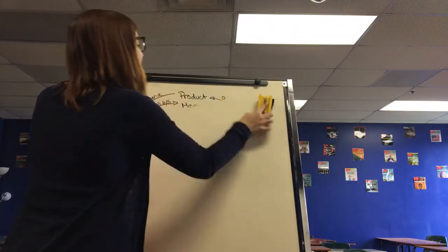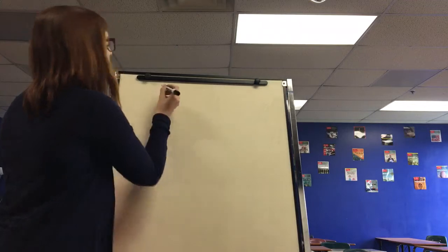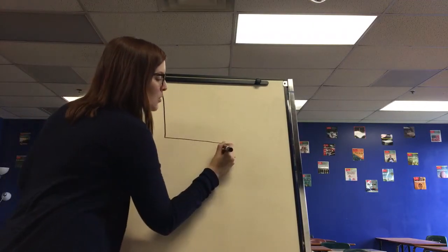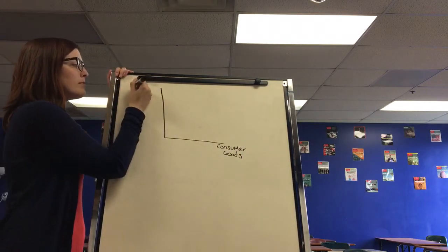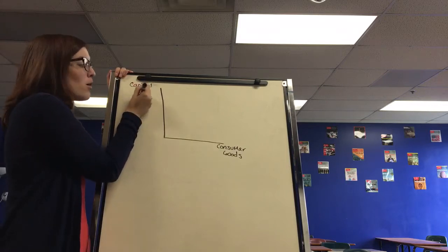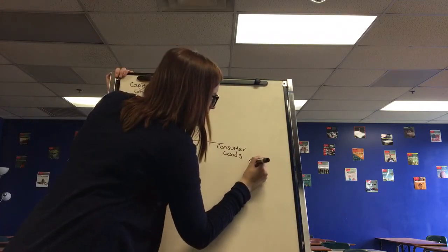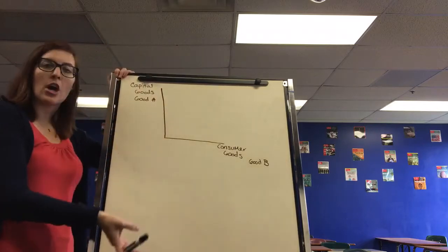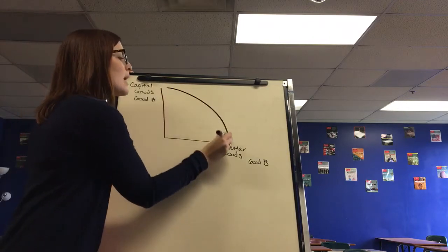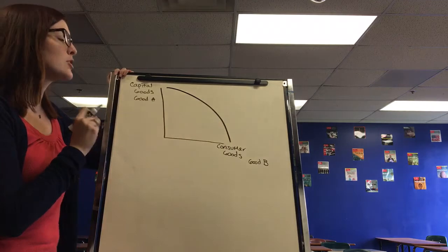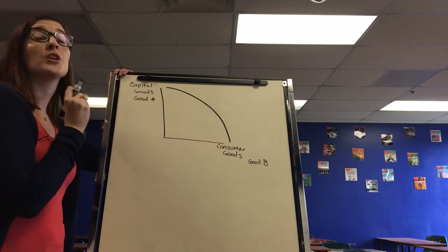The next graph we're going to learn is a graph that you will most definitely see on the AP exam in both the multiple choice and free response sections. It's the production possibilities graph, and this corresponds with the first graph of your graph review. You may have the two types of goods of consumer and capital goods, or it may just be two random goods, Good A and Good B. Either way, we're measuring opportunity costs, what we're giving up of the next best alternative.